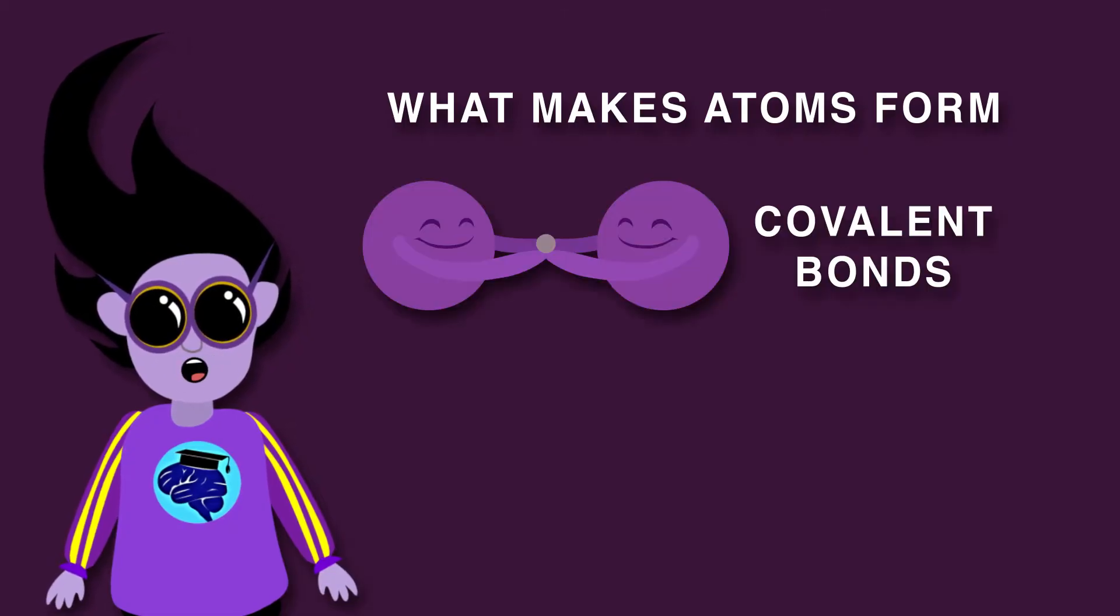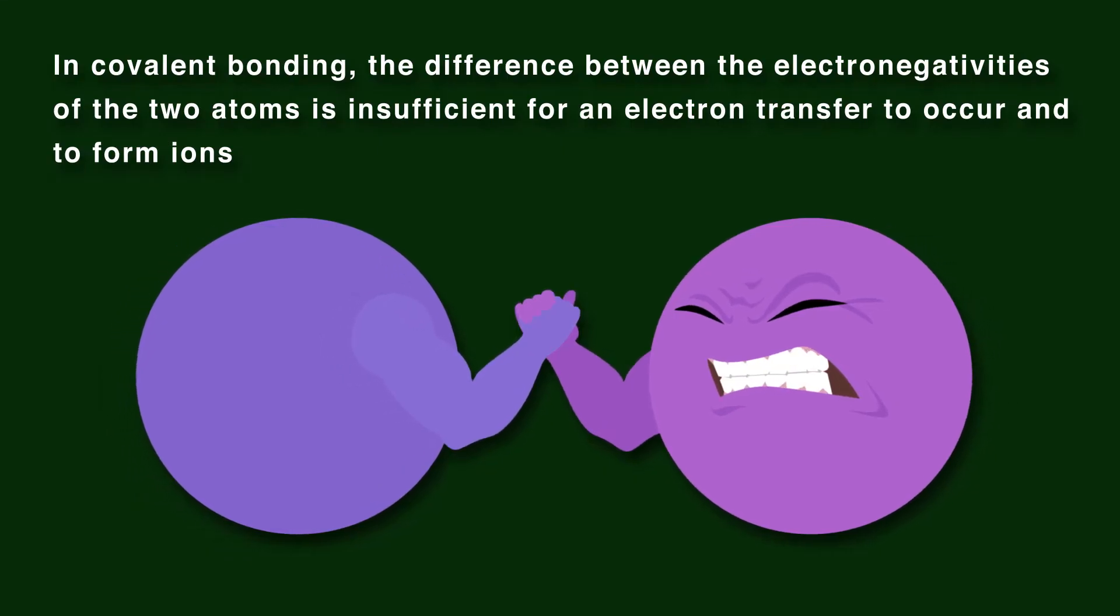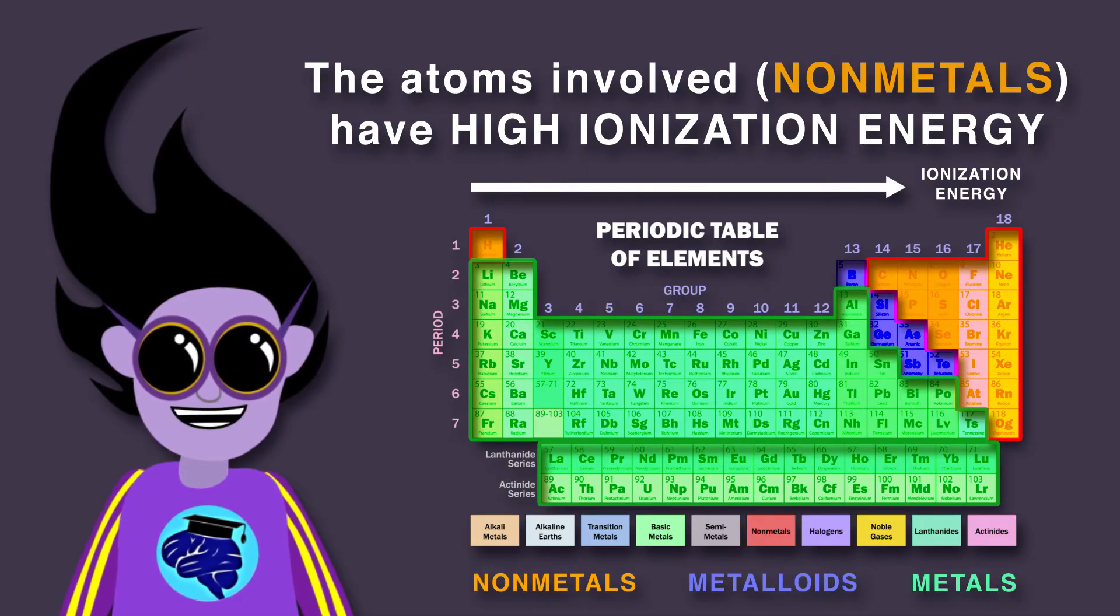But what makes atoms form covalent or ionic bonds? In covalent bonding, the difference between the electronegativities of the two atoms is insufficient for an electron transfer to occur and to form ions. The atoms involved have high ionization energies.